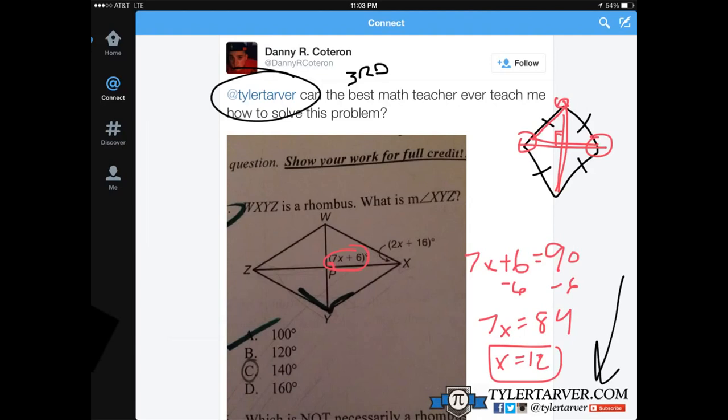Okay. So if X equals 12, we can plug that in to this one to find that angle, which is what we want. Because you already knew this one right here was 90 degrees. So let's plug it in. Because if X equals 12 here, it equals 12 here. 2 times 12 is 24, plus 16 is 40.